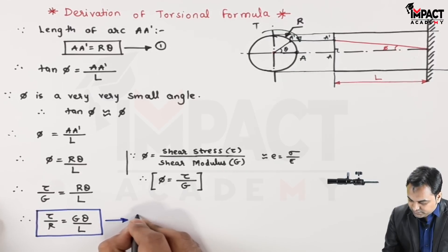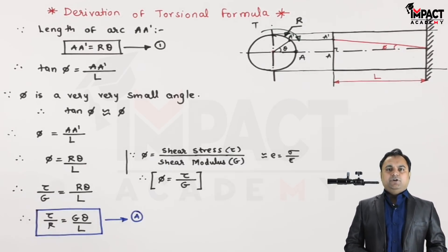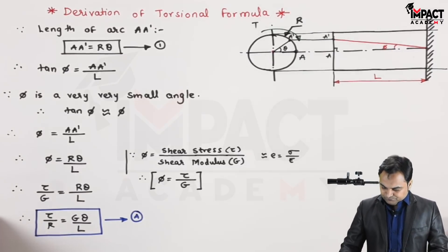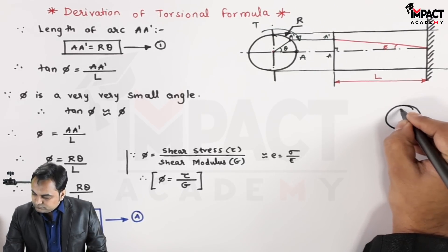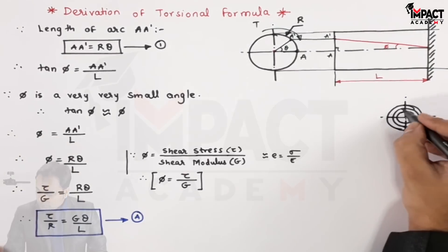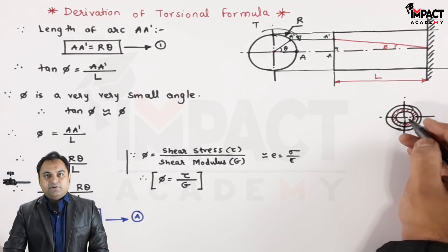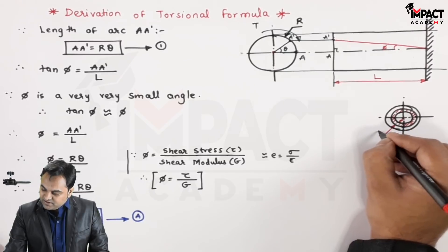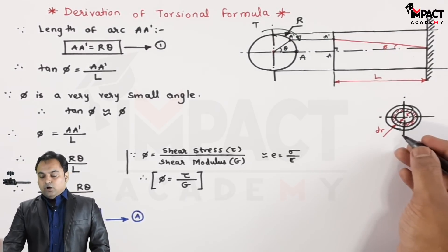This gives us tau / R = G·theta / L, which is Equation A — the first part of the torsional equation. Now I am going to derive the next part. For that, I am again drawing the diagram of the circular shaft and assuming a small ring at a radius of small r.